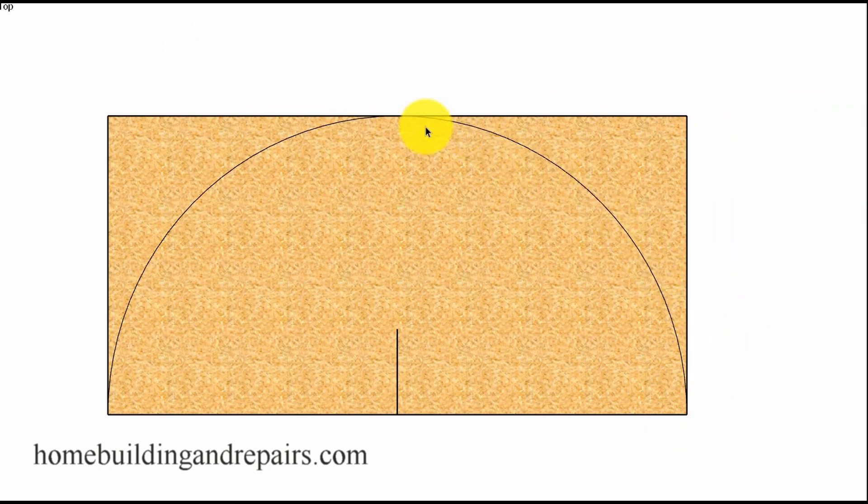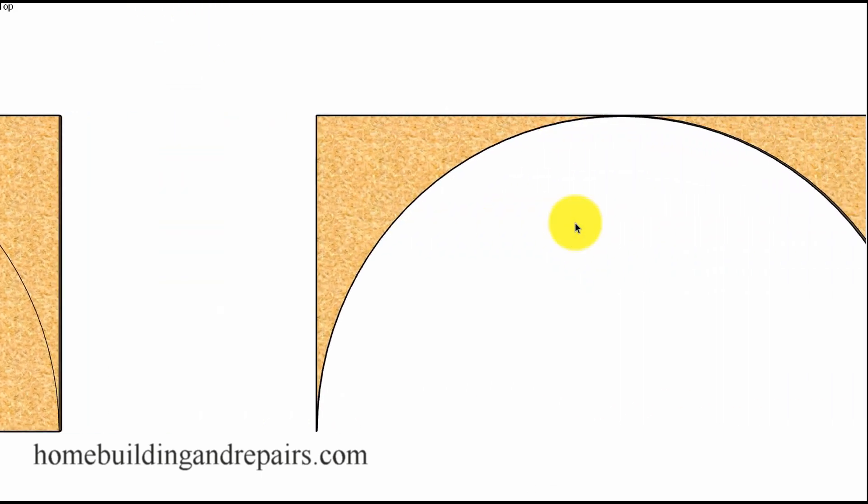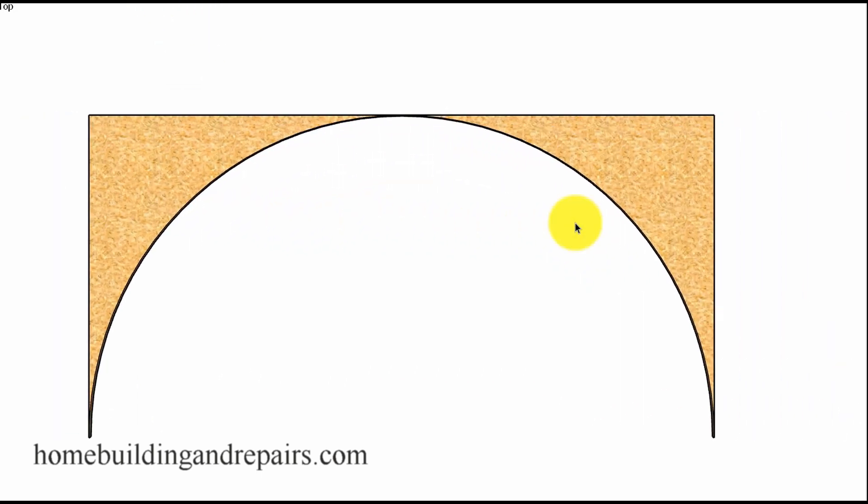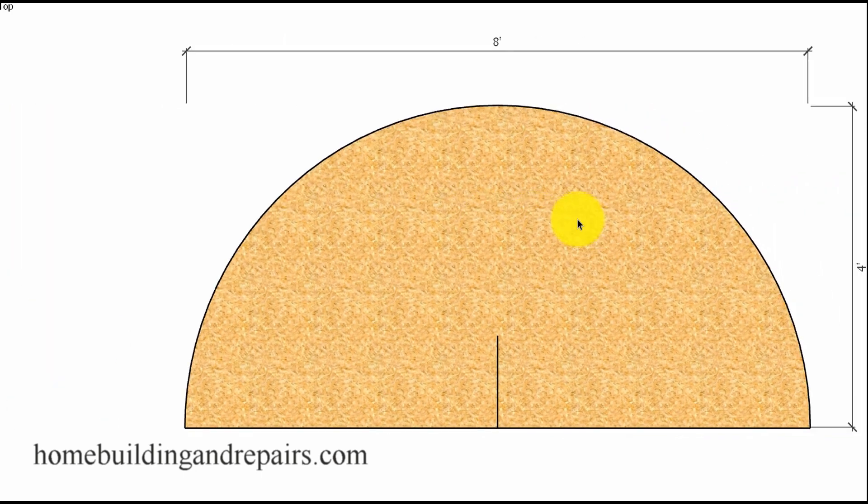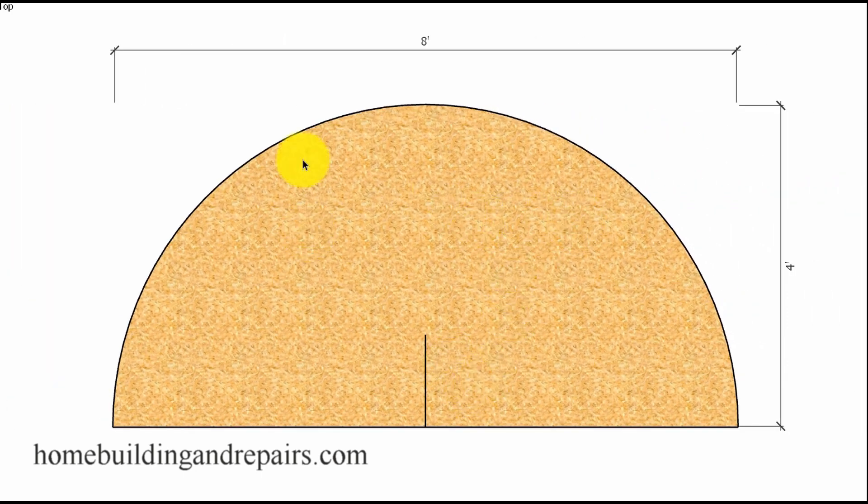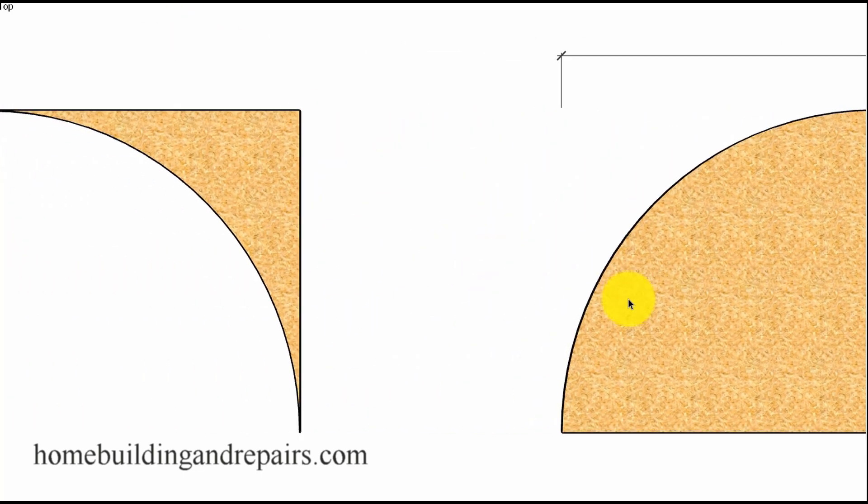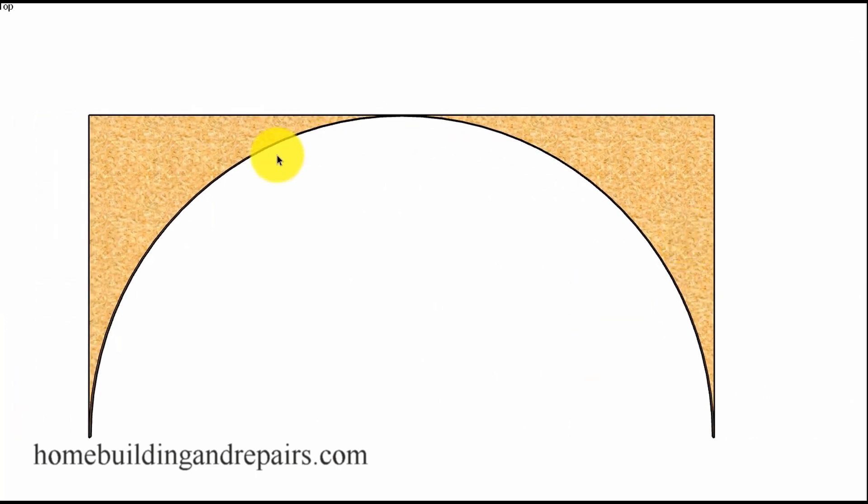After we have drawn our lines we will be able to cut out the shapes with a jigsaw or a skillsaw or even a bandsaw depending upon what we are dealing with. And you can always use the other shape also. So this gives you an idea how you can create a shape for a half circle arch.